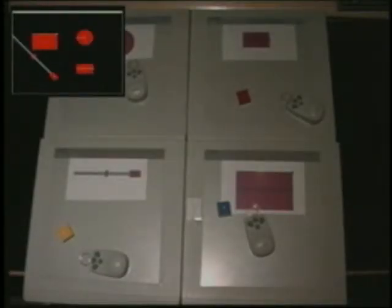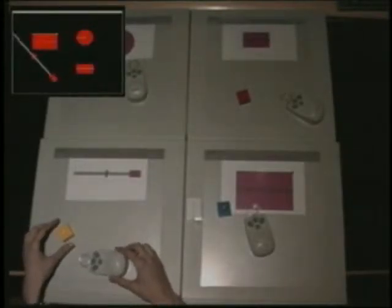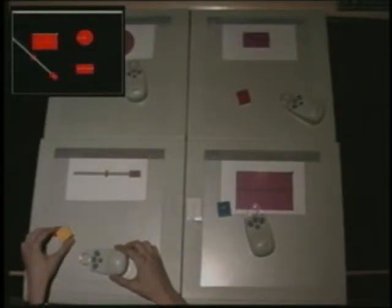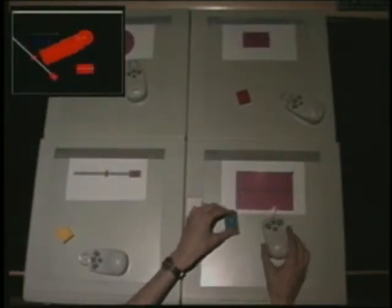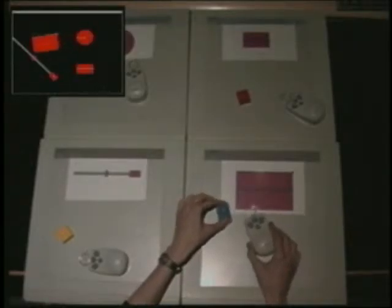This is the space multiplex condition where we're using generic devices - a puck and a brick for each of the widgets. Here we have the ruler widget being controlled, and here the stretchable square being controlled.